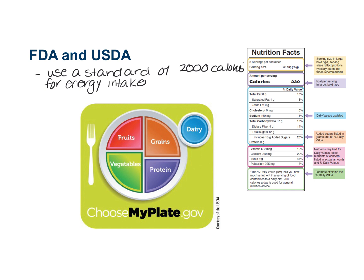As a reminder, one nutritional calorie equals one kilocalorie of energy. These guidelines are reviewed and revised about every five years. Recently, the U.S. Department of Agriculture — the USDA — has issued the food guide MyPlate, which is designed to replace the old MyPyramid posters with new recommendations.